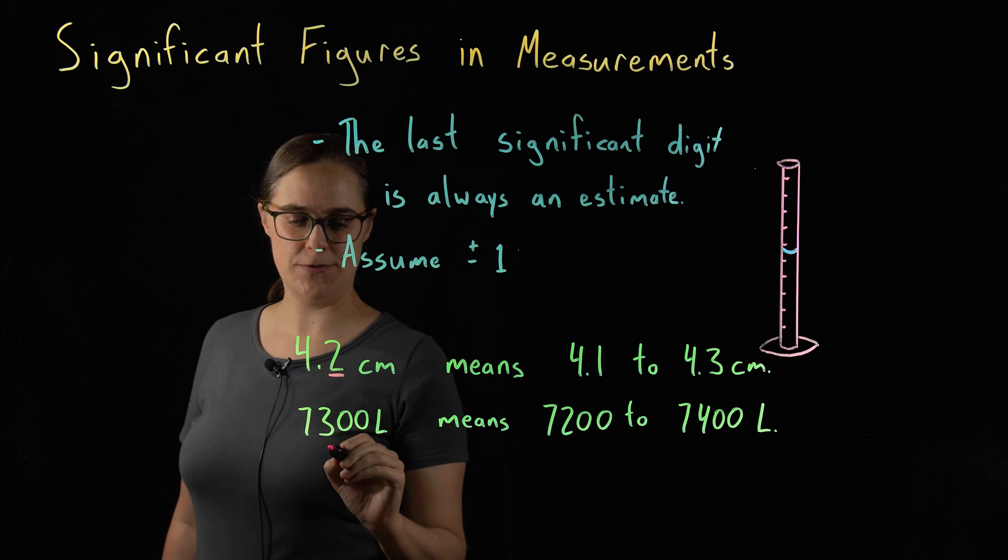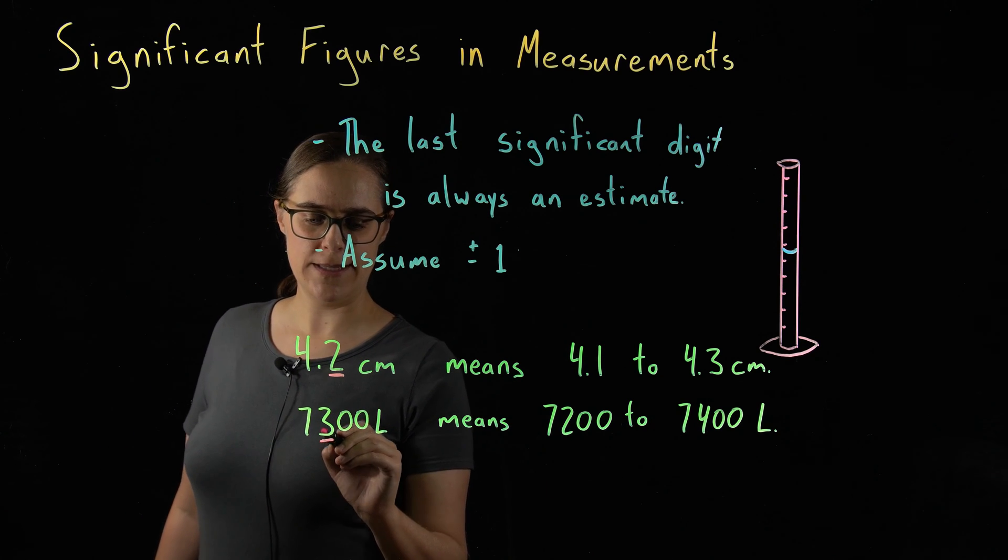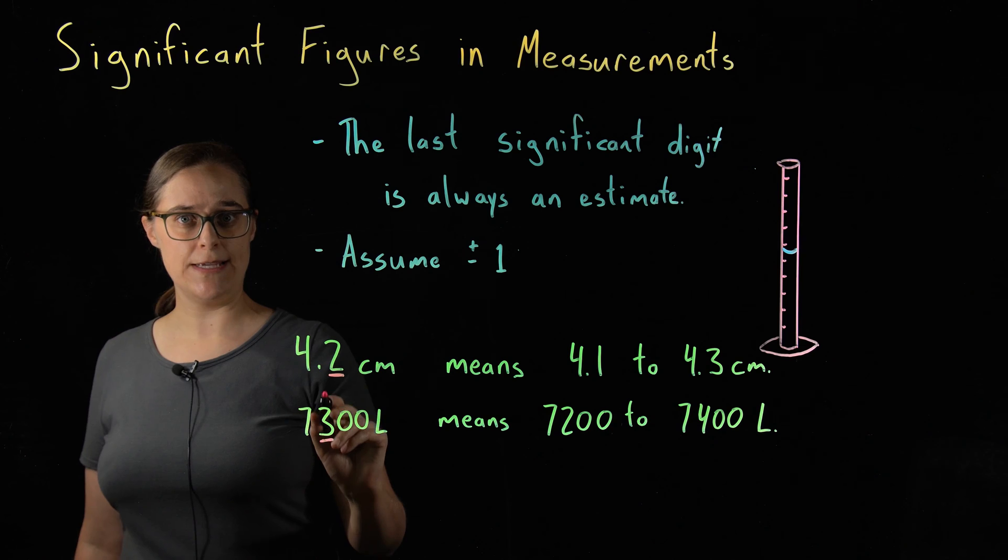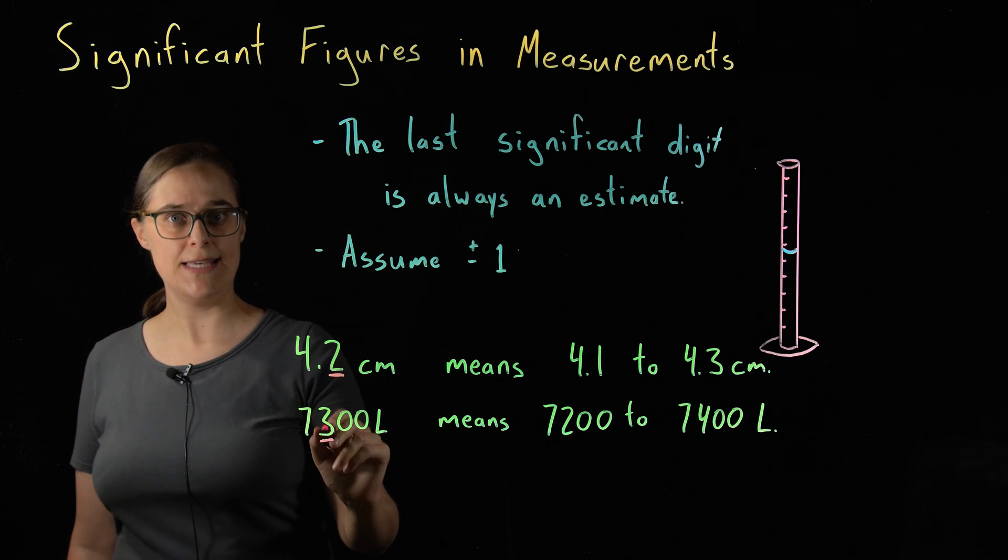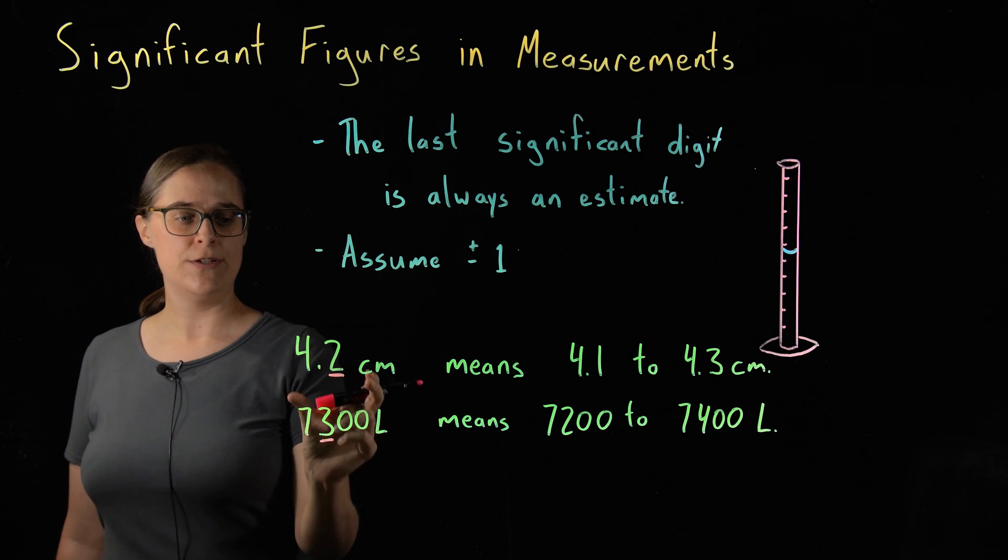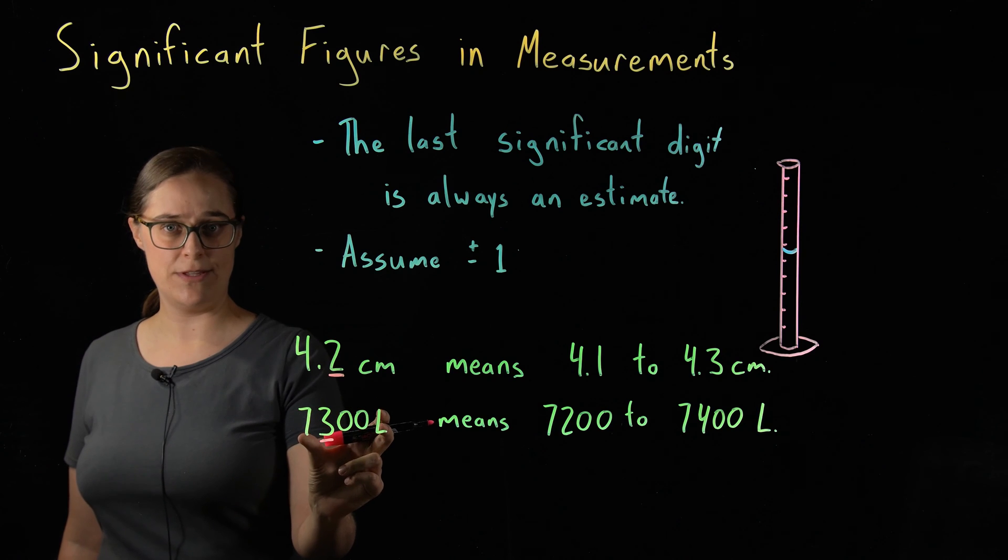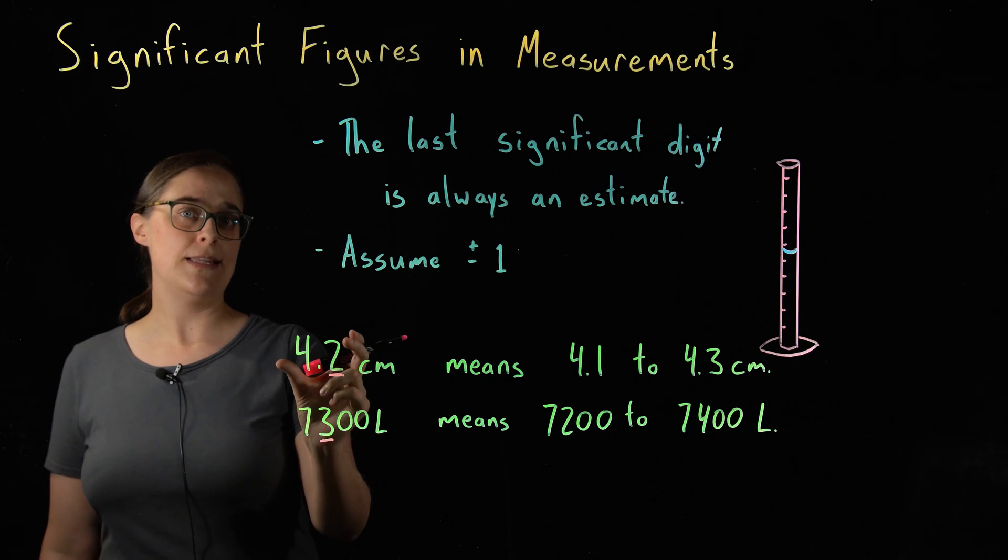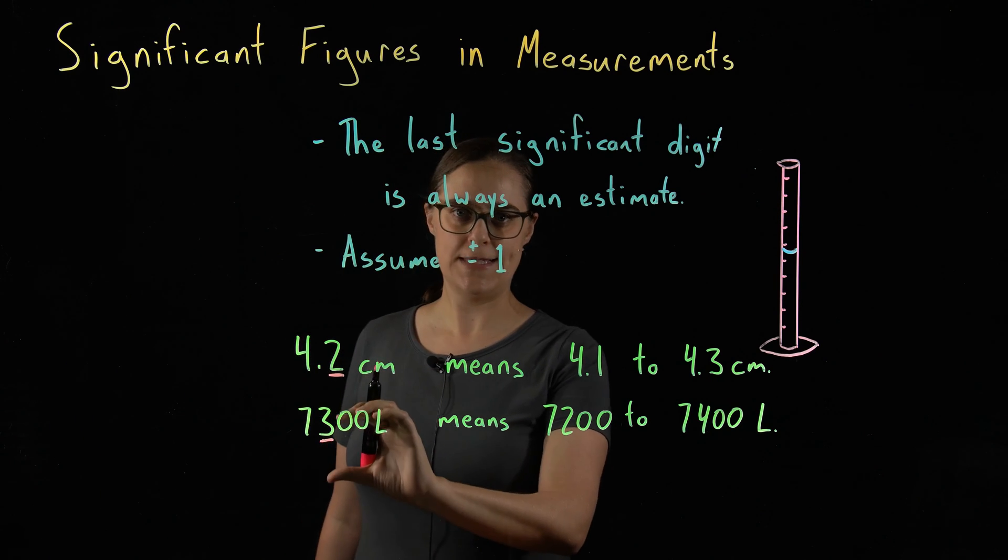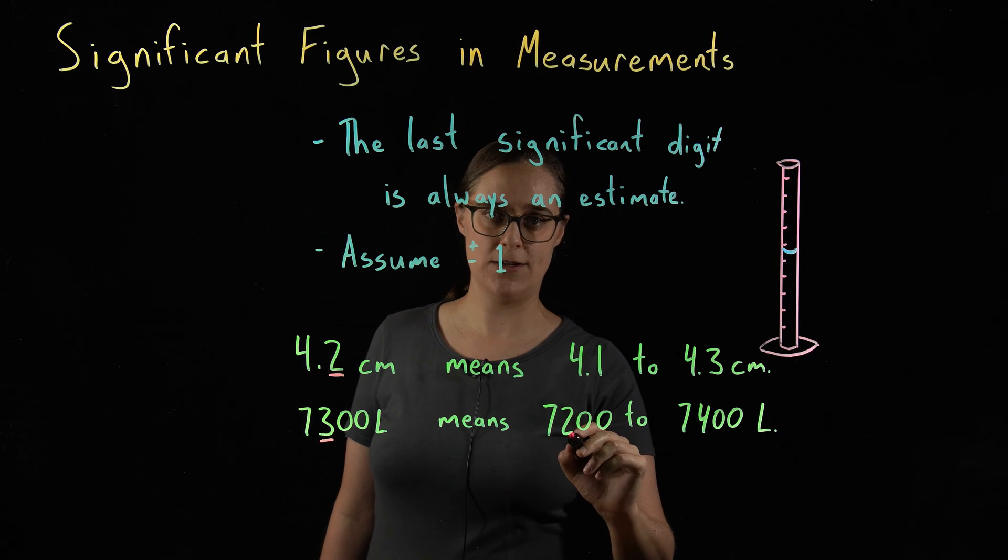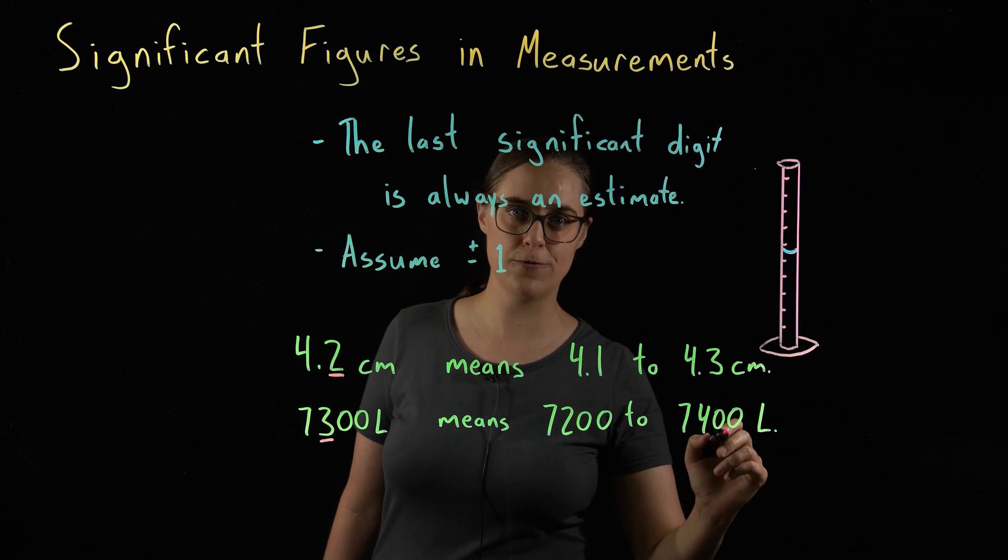Second example, 7,300 liters. The last significant digit is the 3 in this one hundredths place. It is plus or minus 1. So a measured quantity of 7,300 liters, the actual quantity is anywhere in the range of 7,200 to 7,400 liters.